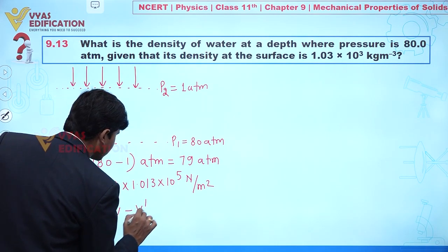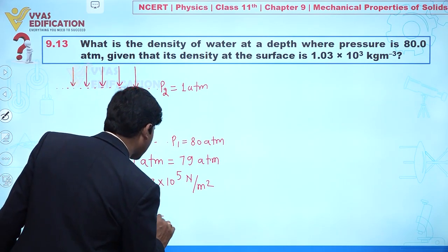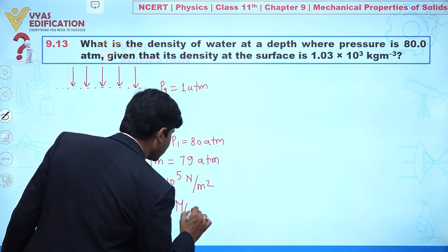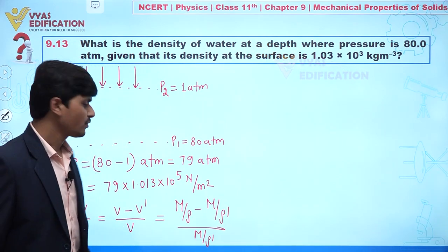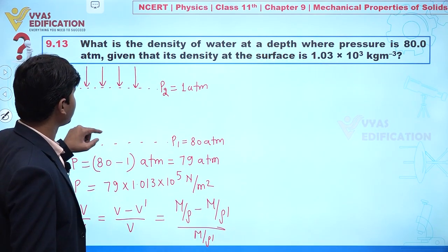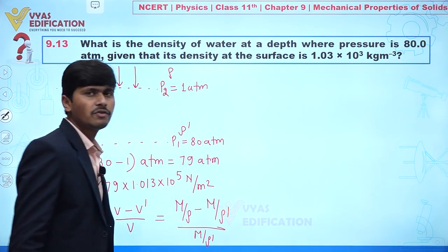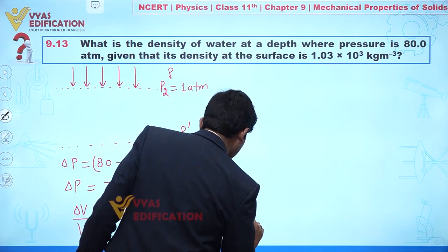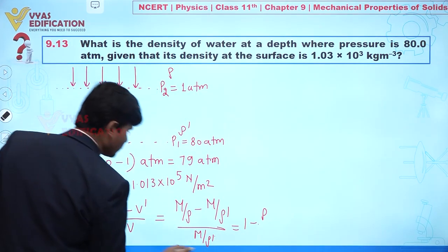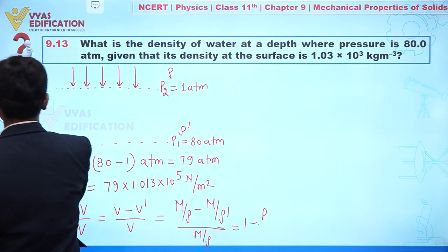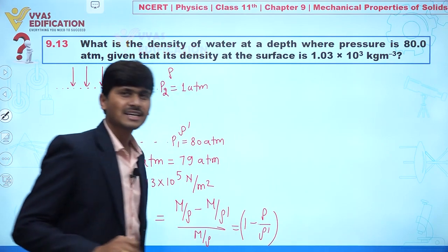ΔV/V = (V − V') / V, which is initial volume minus final volume over initial volume. We can write this as (m/ρ − m/ρ') / (m/ρ), which simplifies to 1 − ρ/ρ'. Here ρ' is the density at depth and ρ is the density at the surface.